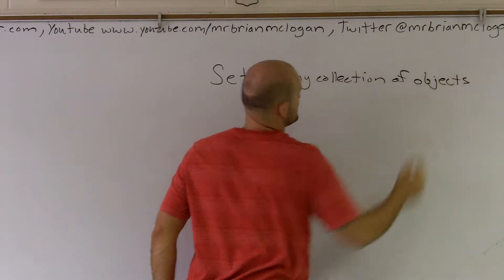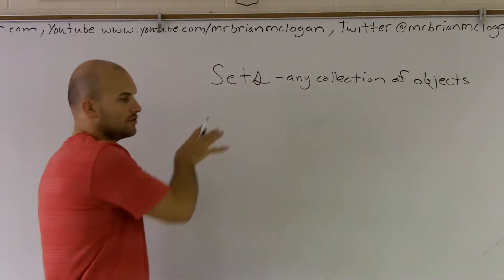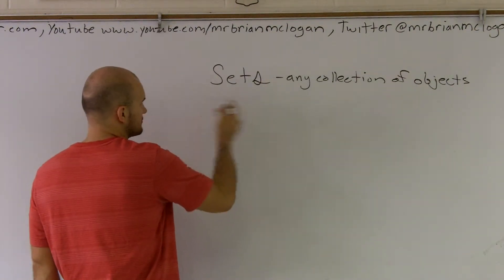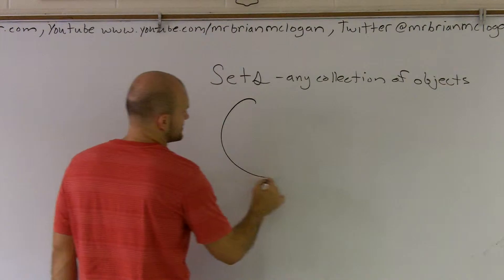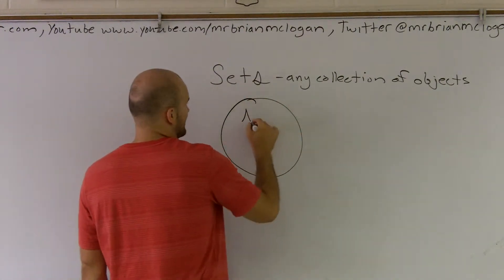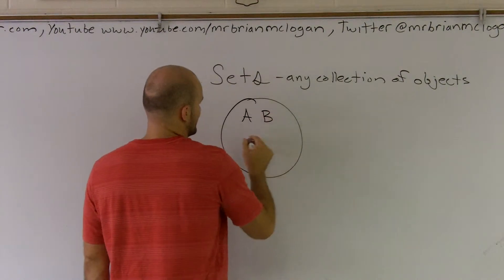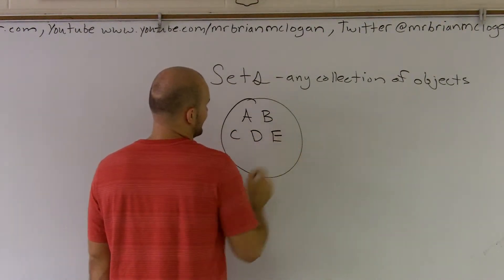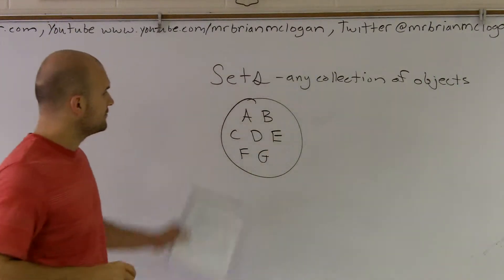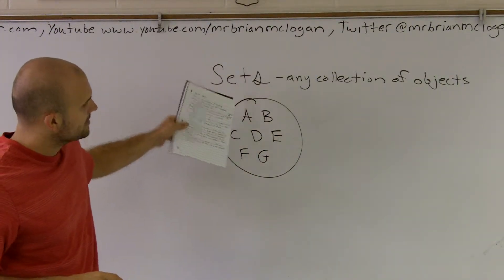Now, there's many ways that we can represent sets. For the purpose of this video, I'm going to represent a set to start off with just a nice circle. So, one thing I can say is I can have A, B, C, D, E, F, G. So, this would be a set of letters.